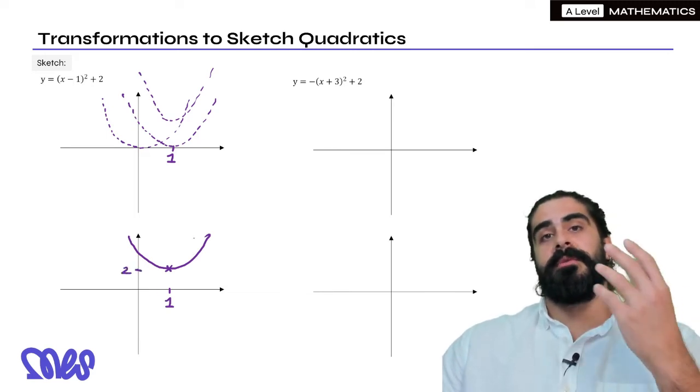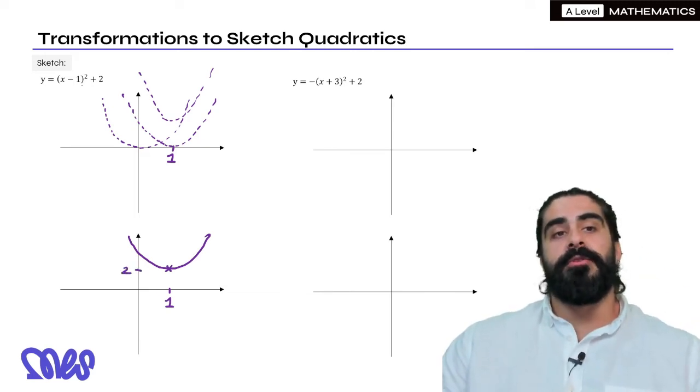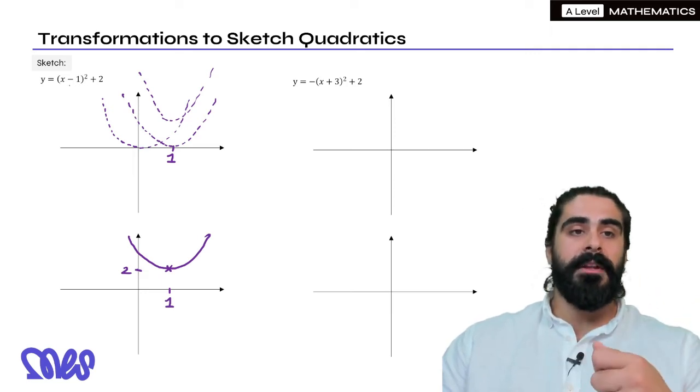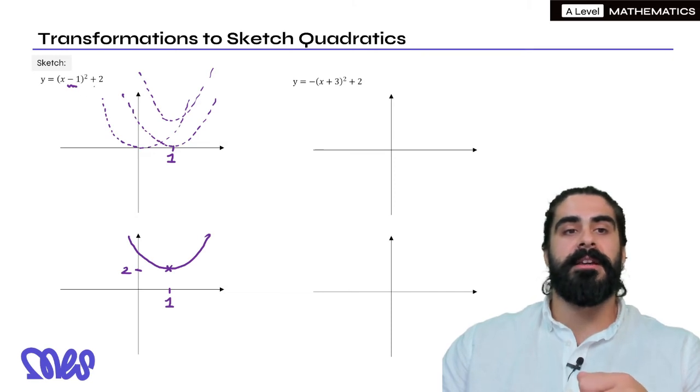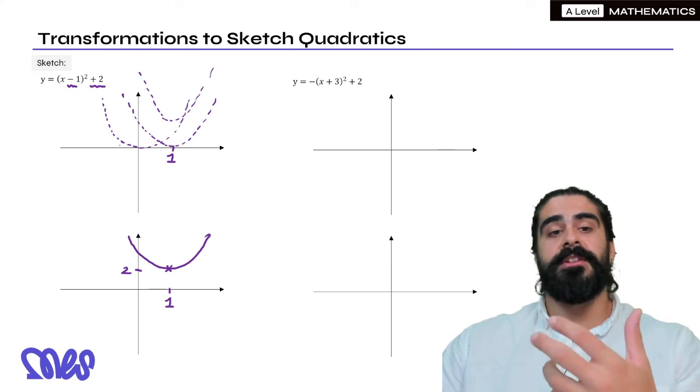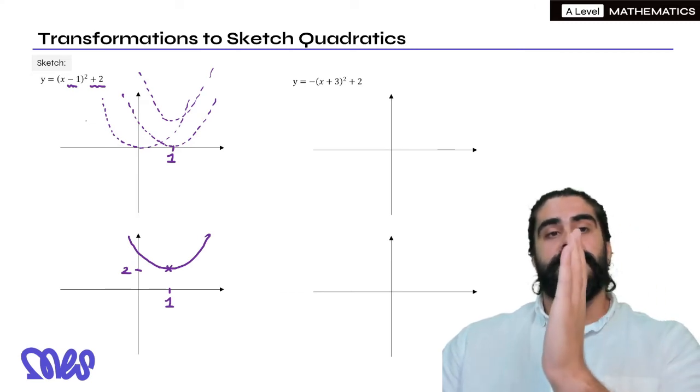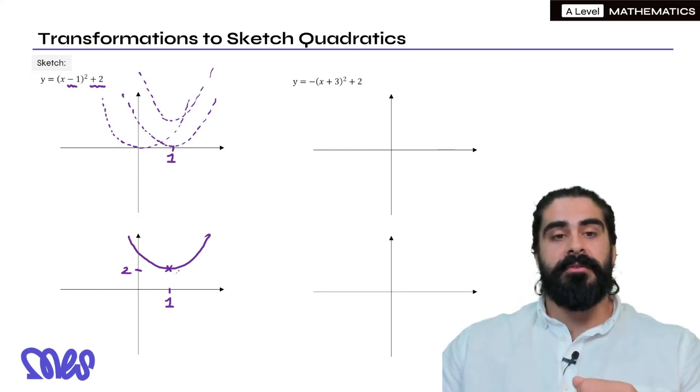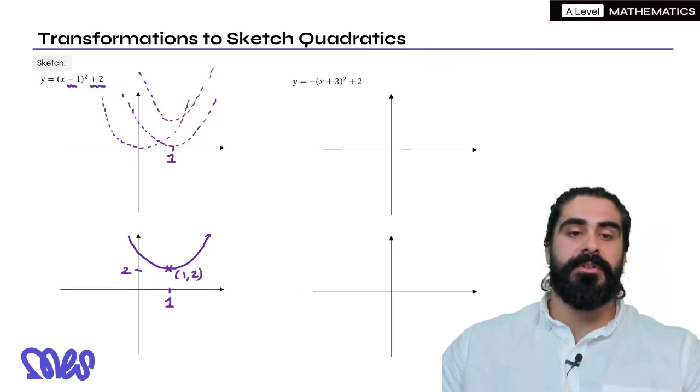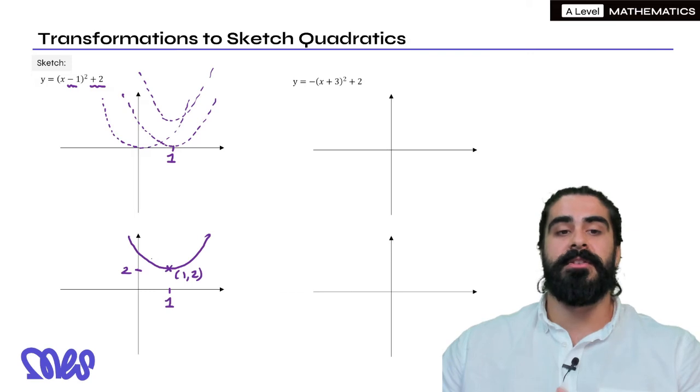Now this is interesting because remember at GCSEs you learned that when you complete the square you can find the turning point by doing the negative of the number inside the bracket comma the number on the outside of the bracket, and that's because of the transformations. Look, the 1 moved it to the right so the x coordinate here is 1, and then we moved it up by 2 so the y coordinate here is 2. So you can see now why in GCSE that was the case.